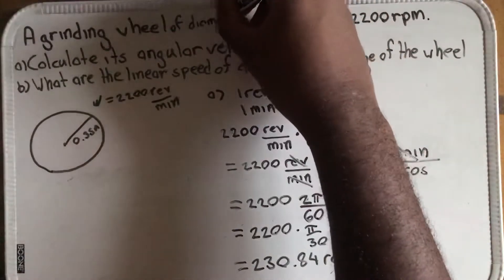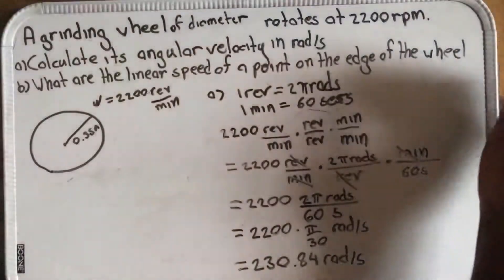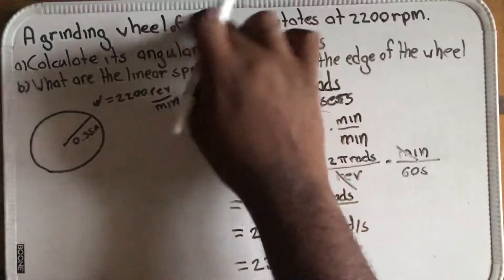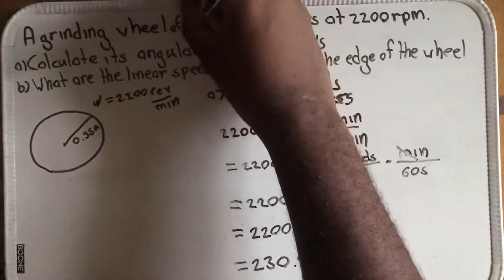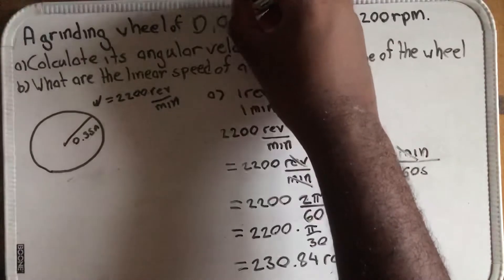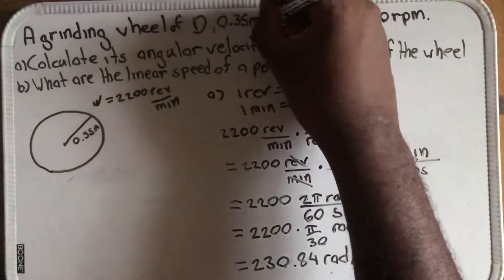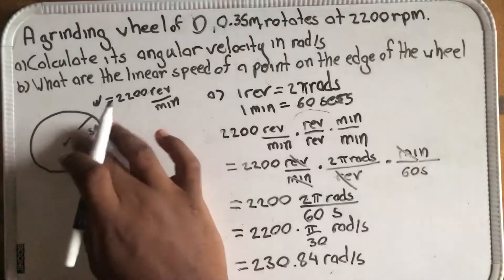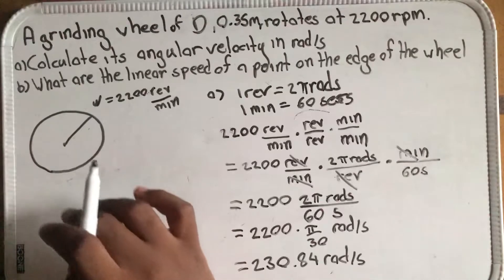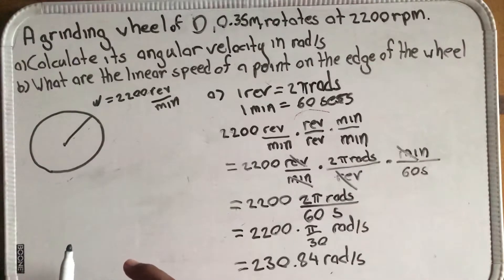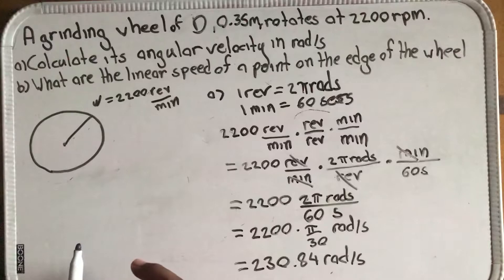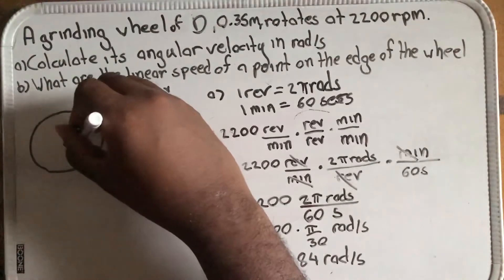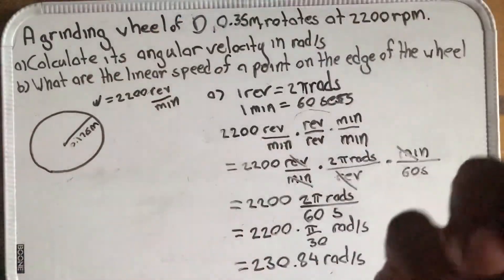That's actually supposed to be diameter. I'll just put D of 0.35 meters. That's actually supposed to be diameter, so this 0.35 is the actual diameter. The radius would then just be 0.175 meters.